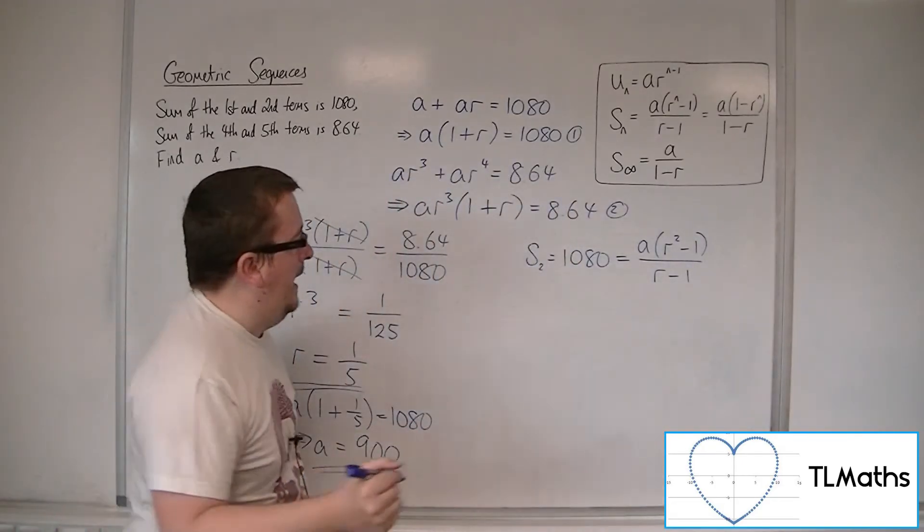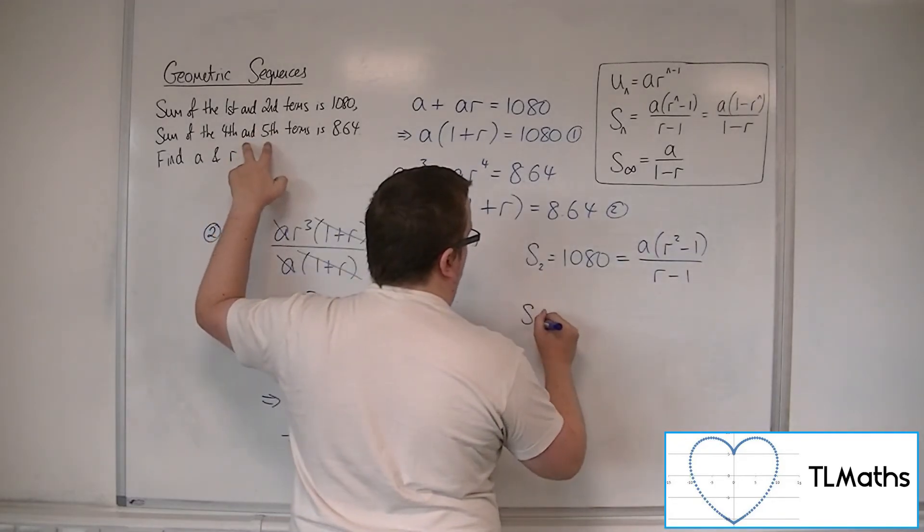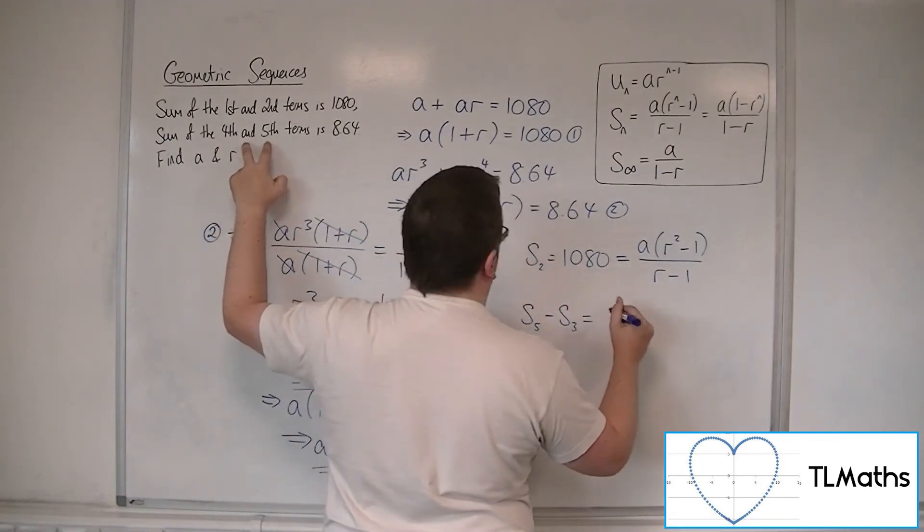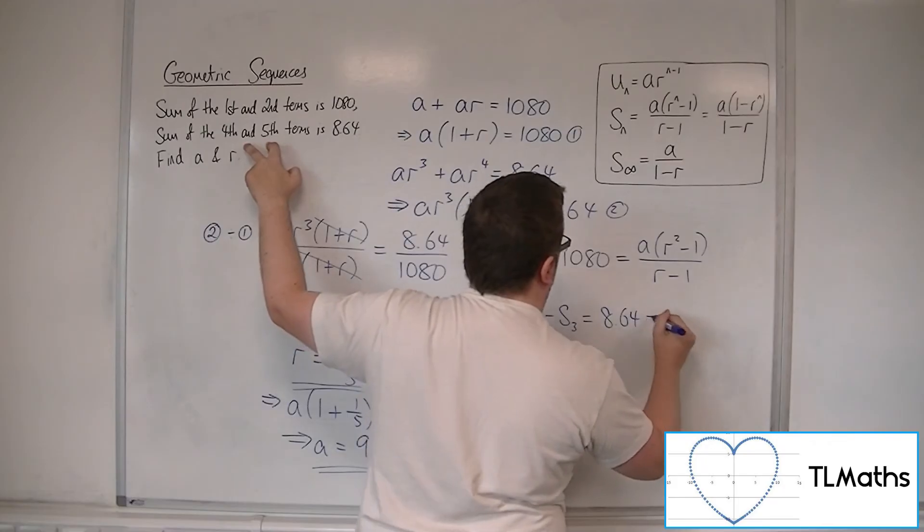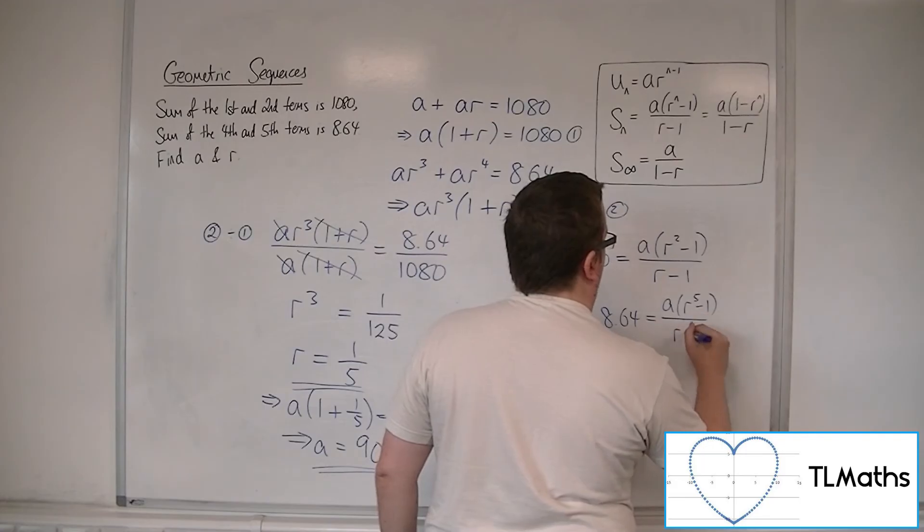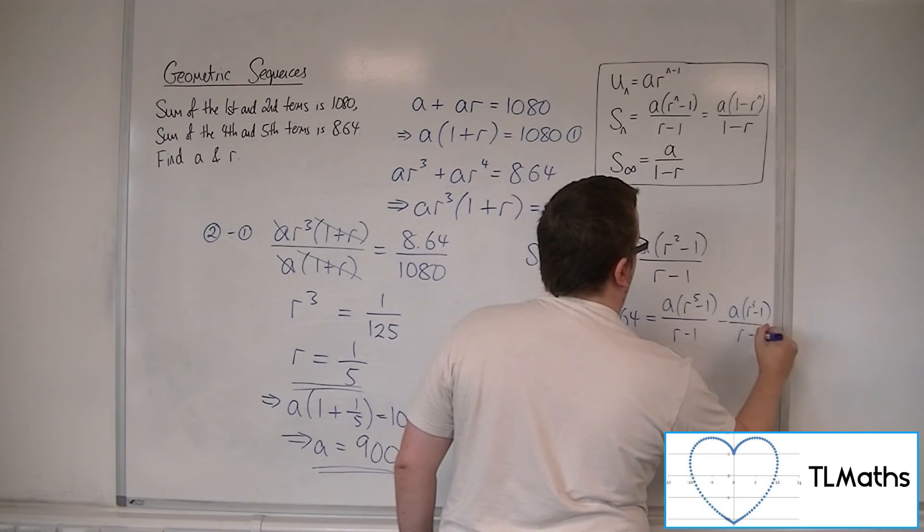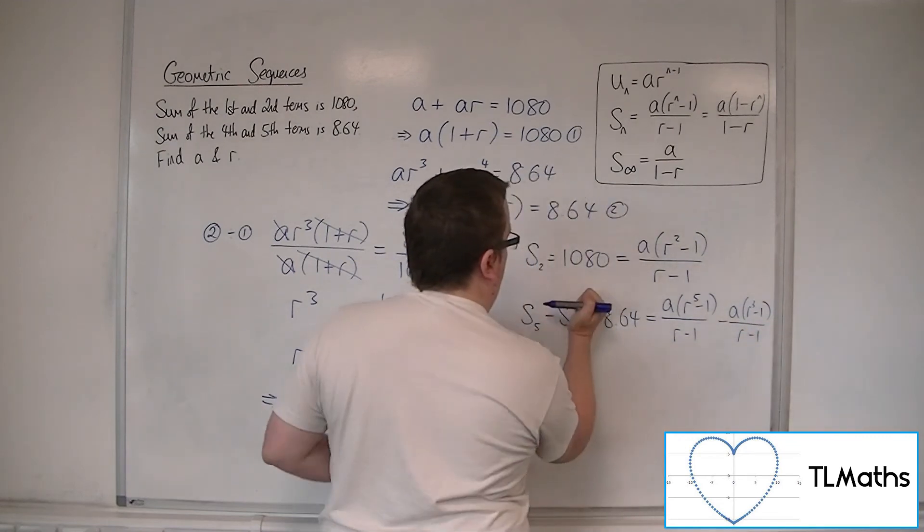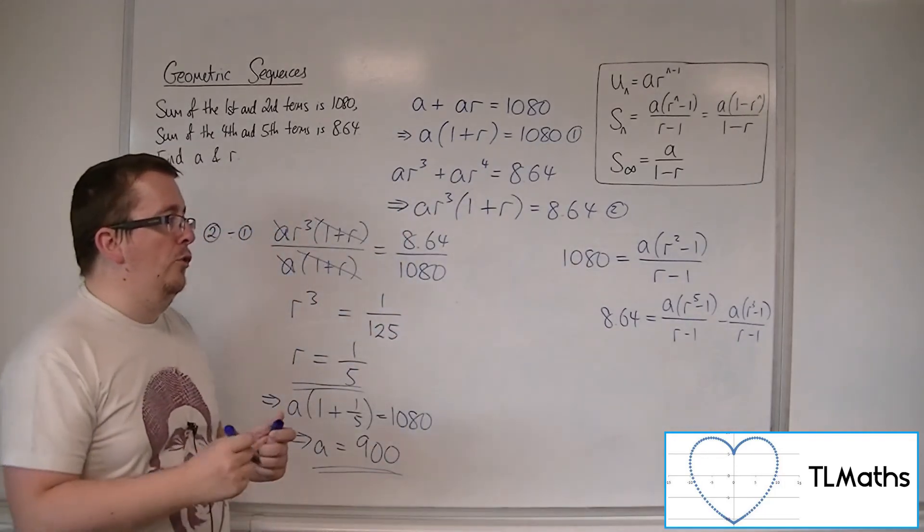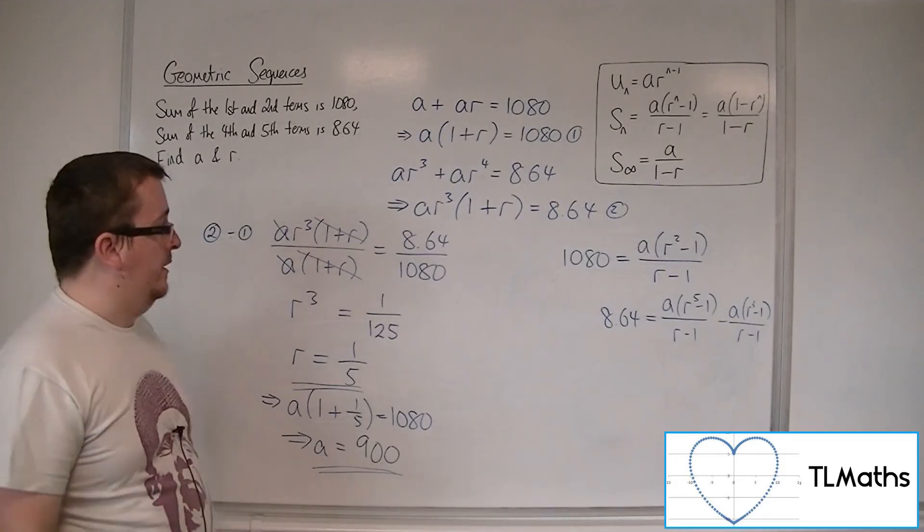The sum of the fourth and fifth terms, you could represent as the sum of the first five terms take away the sum of the first three terms. Represent that as A times R to the 5 minus 1 over R minus 1, take away A times R cubed minus 1 over R minus 1. If you had these two equations to then solve for A and R, you'd have a bit of a problem.